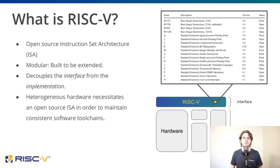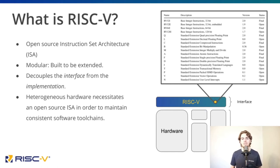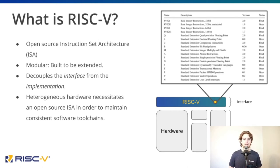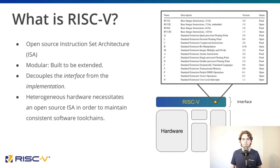As with Kubernetes, there will be — and already is — countless RISC-V implementations, all adhering to a common, modular specification that allows implementers to cater to specific use cases that can be targeted by any tooling. For Kubernetes, this tooling is operators. For RISC-V, it's compilers.